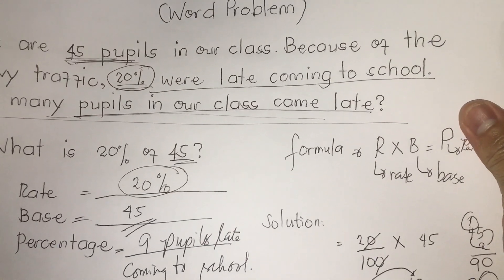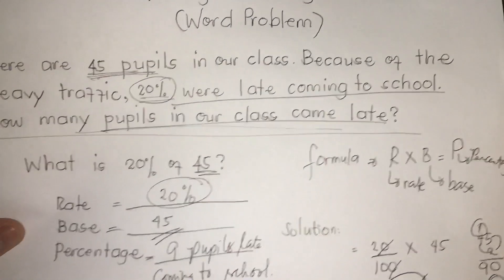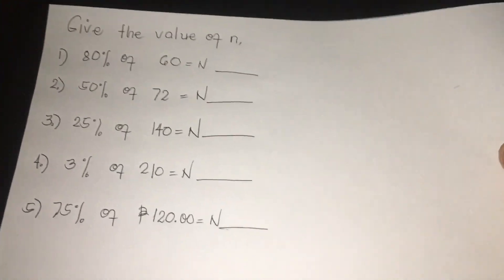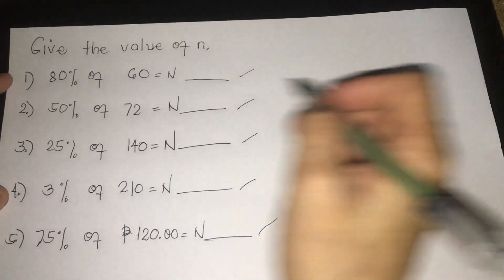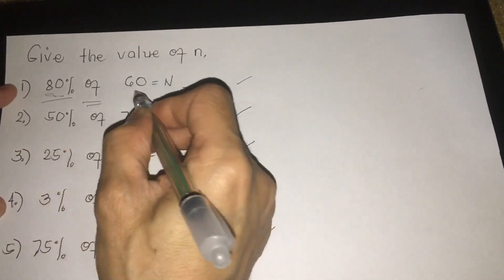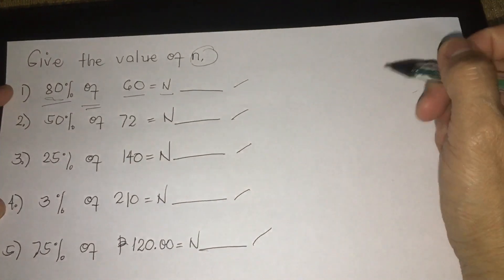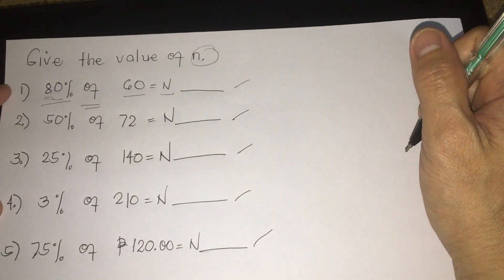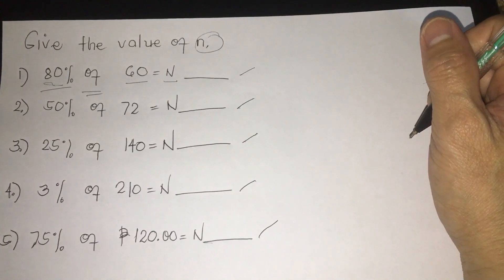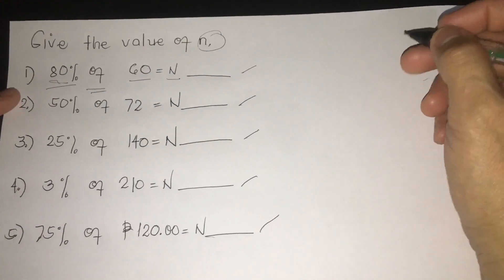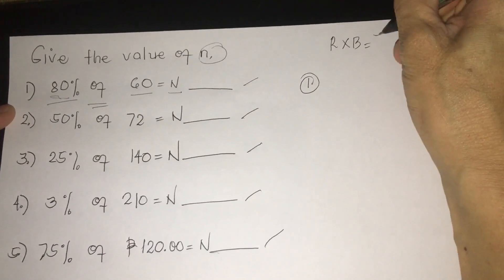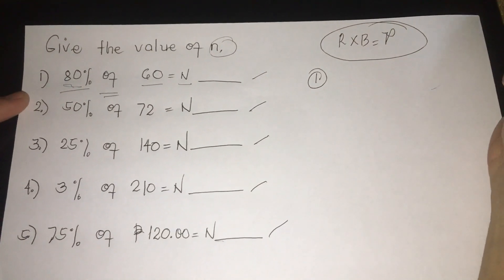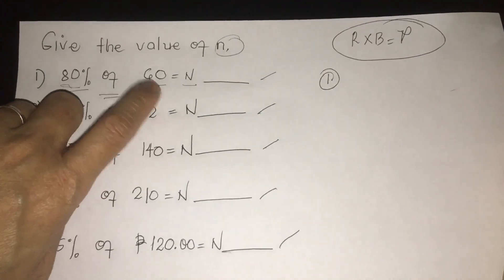Now class, let's have first practice. Let us find out if we can still remember the right formula of finding percentage. I have here 1, 2, 3, 4, 5 equations or problems. Number 1: 80% of 60 is equal to n. Remember, n is the unknown value, that means we are going to explore, we are going to solve, so that we can find the exact answer. So now before we solve for number 1, remember our formula is R times B is equal to P, our percentage. This is our formula.